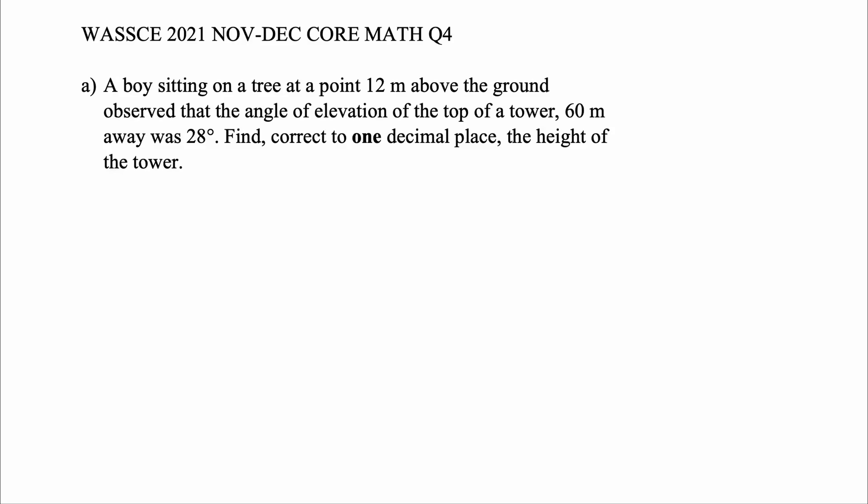Hi guys, welcome to Sabonzi Academy. In today's video we'll be solving question 4 of the 2021 Core Mastery questions. We'll begin with question 4a: a boy is sitting on top of a tree at a point 60 meters above the ground, and observed that the angle of elevation of the top of a tower 60 meters away was 28 degrees. Find, correct to one decimal place, the height of the tower.